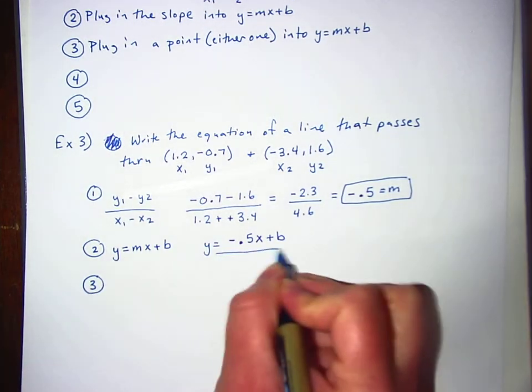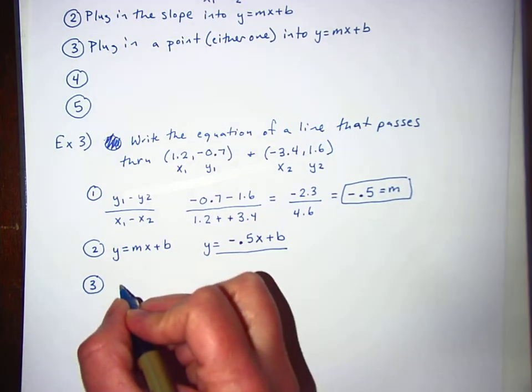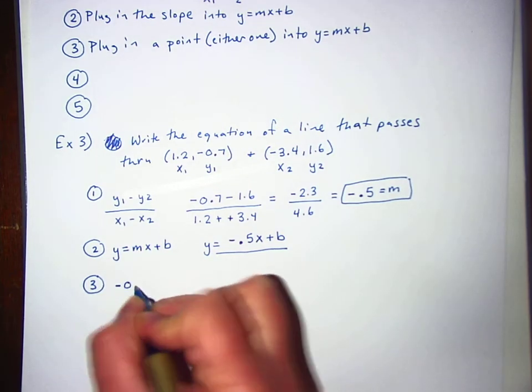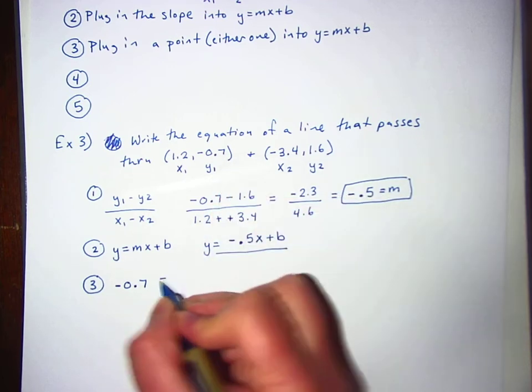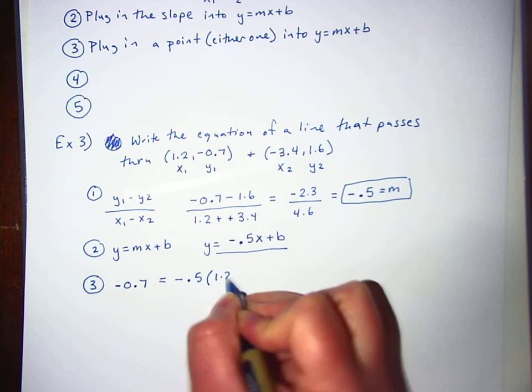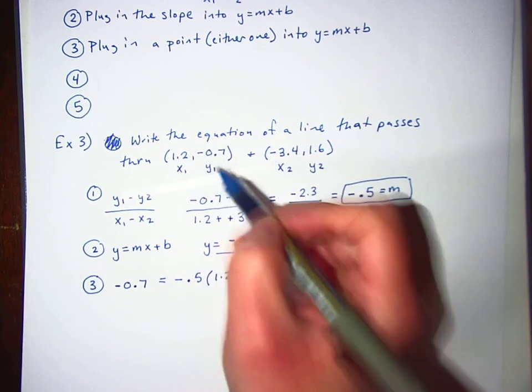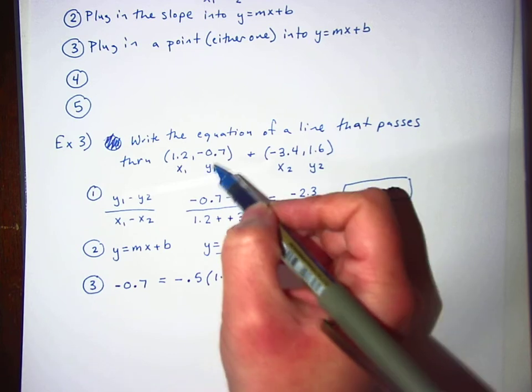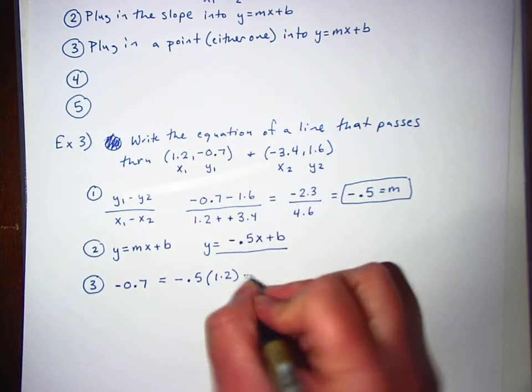So I'm using this equation right here that I just made when I put the slope in. And I'm going to put in the y, which is negative 0.7 right here, equals negative 0.5 times 1.2 right here. It is really important that you pick the two numbers that are in the same point. You can't pick the y from this one and the x from that one. That doesn't work. Plus b.